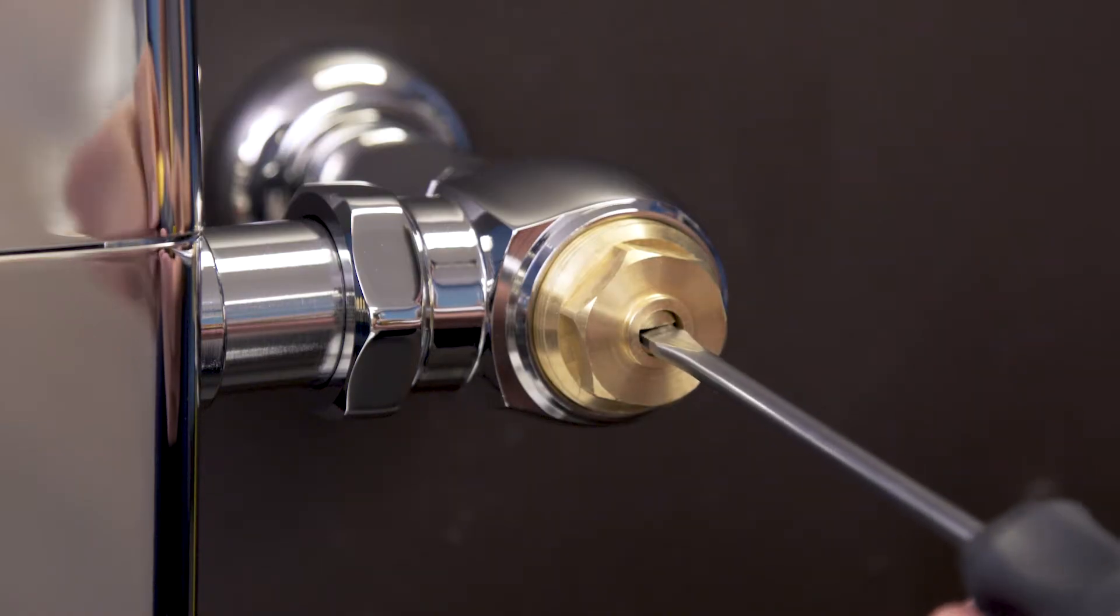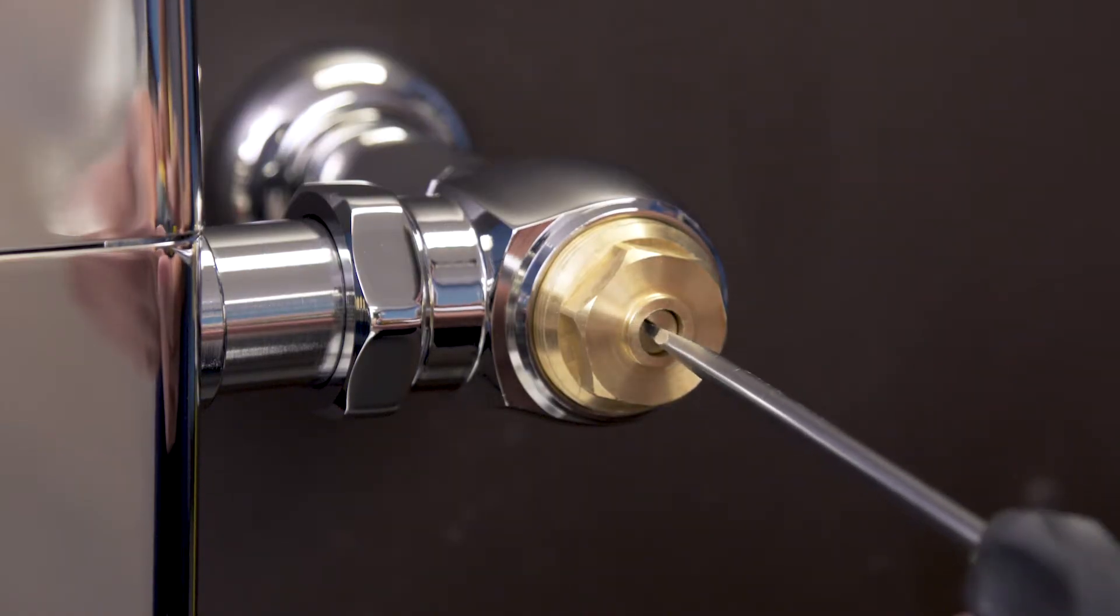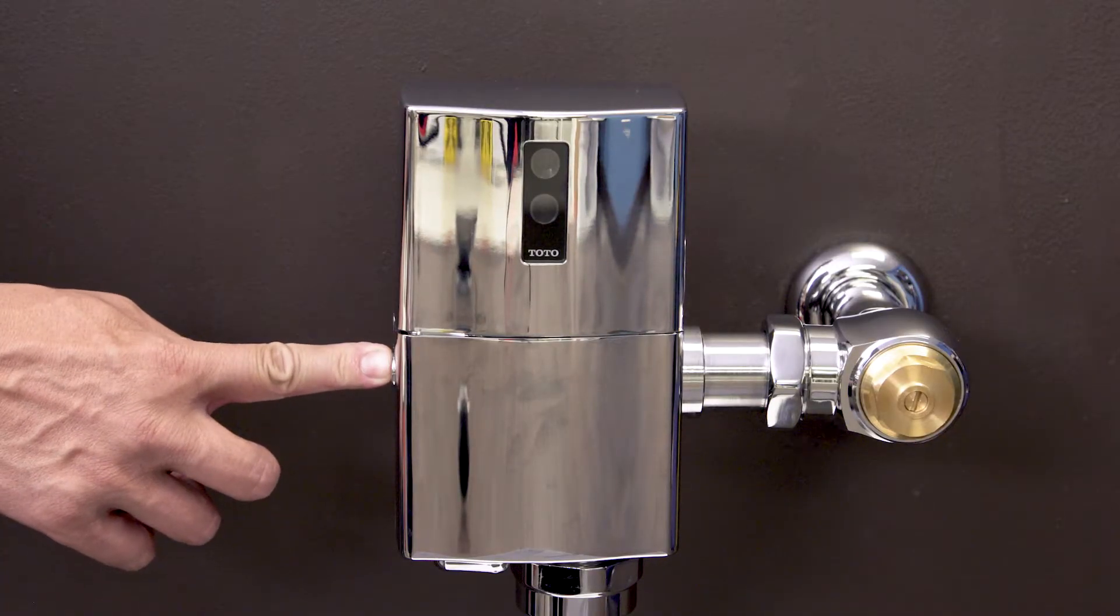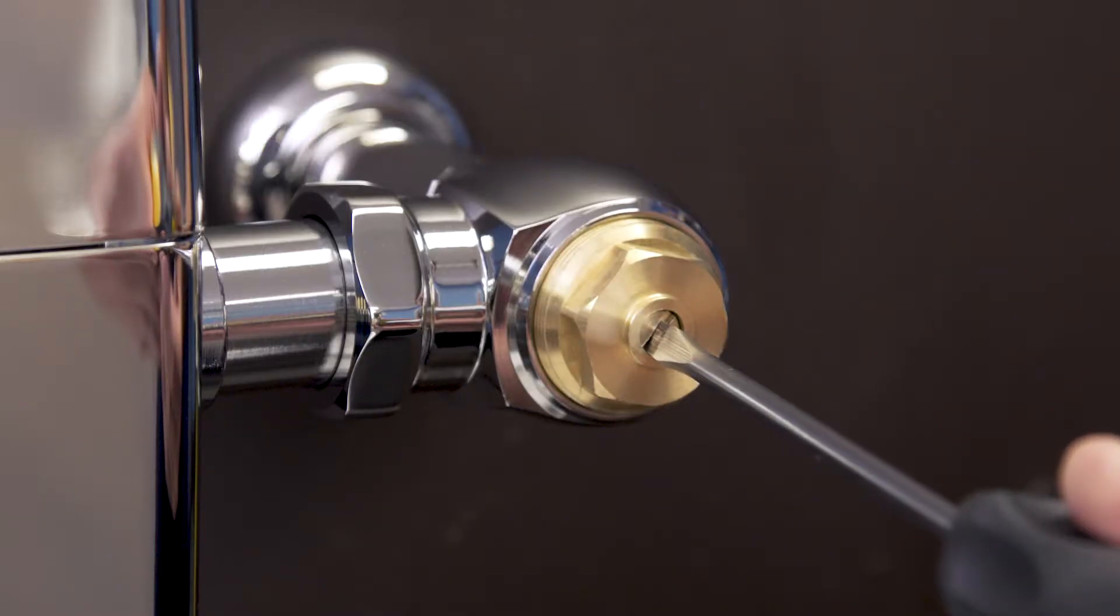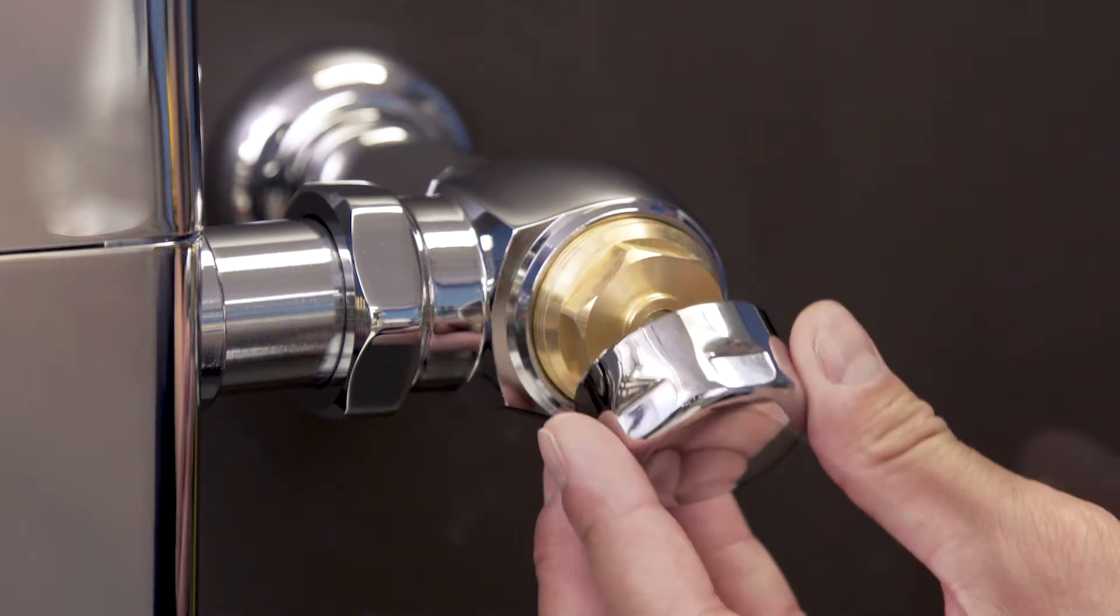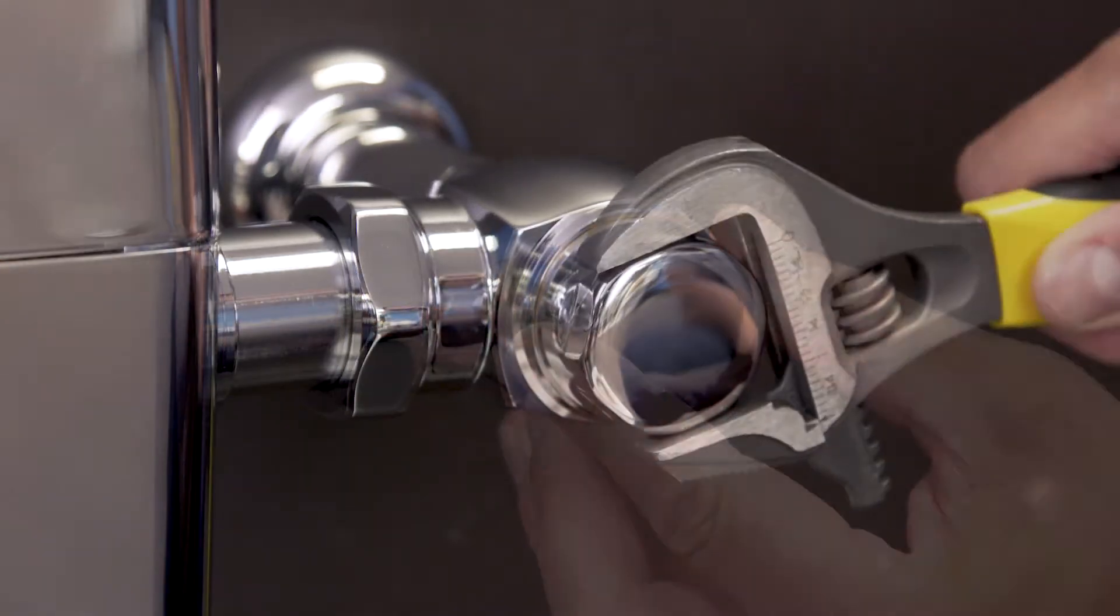Turn on the water by opening the control stop. Now test the flushometer and adjust the control stop until you get a normal flush with a quiet operation. Finally, replace the cap.